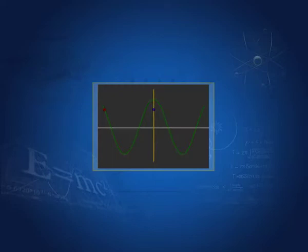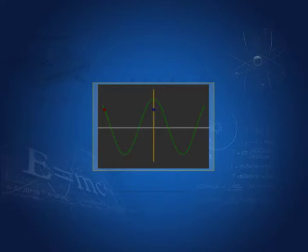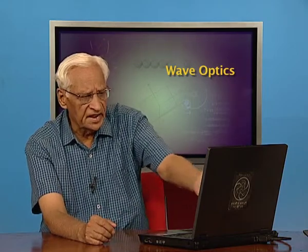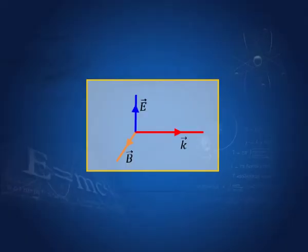You see, this wave is going like this, while this particle is just jumping up and down, going up and down at the same place — it is not moving. This wave is shown again: this is the magnetic field, this is the electric field, and this is the wave propagation direction.